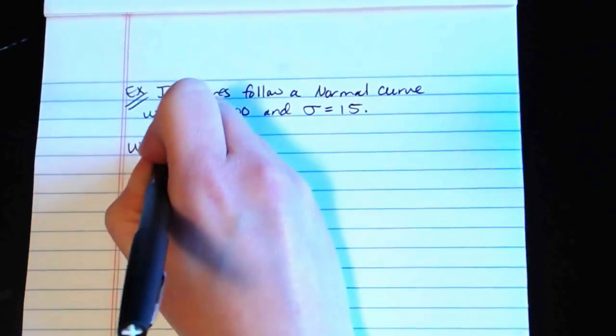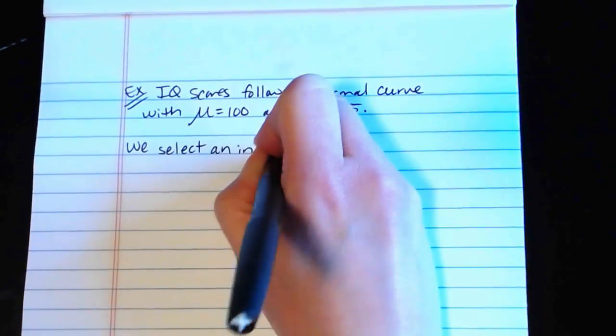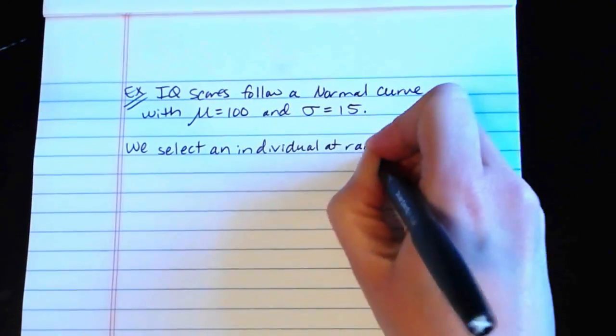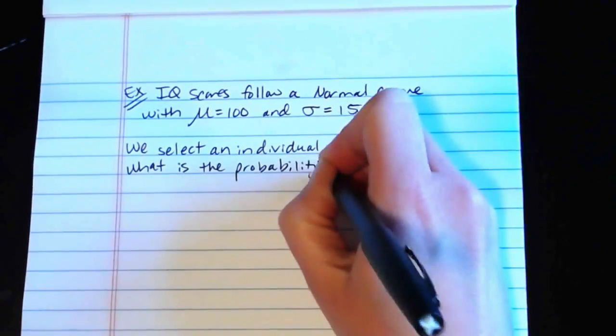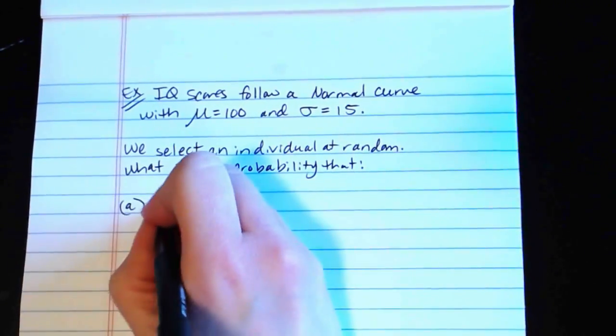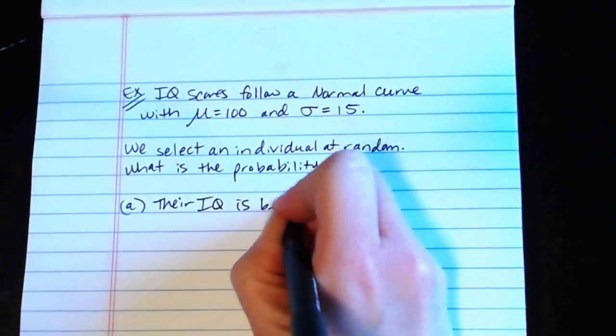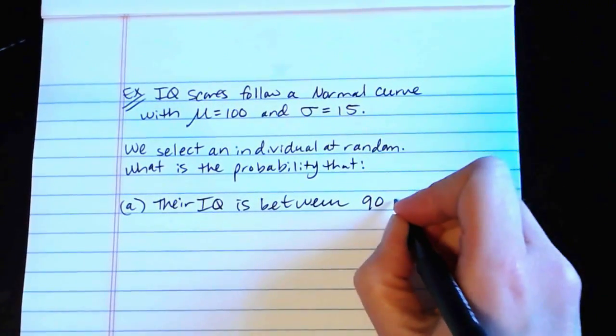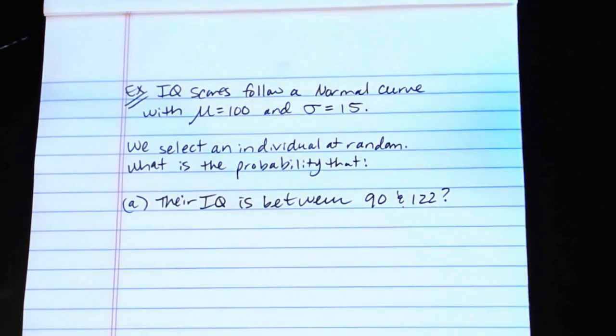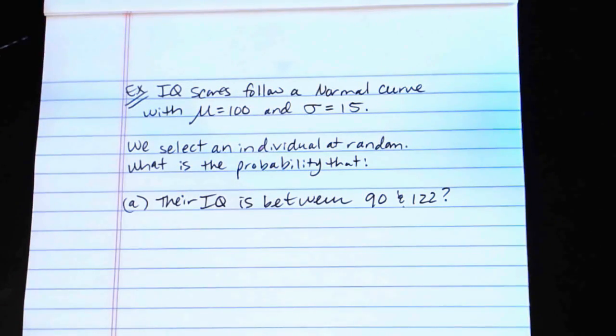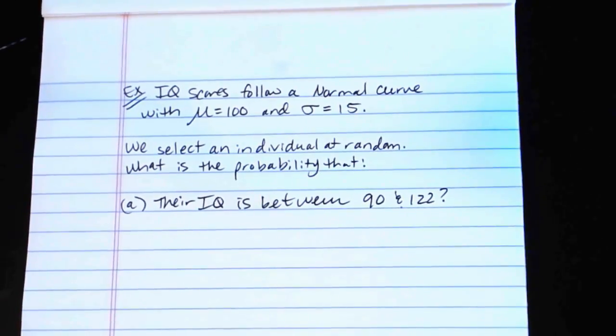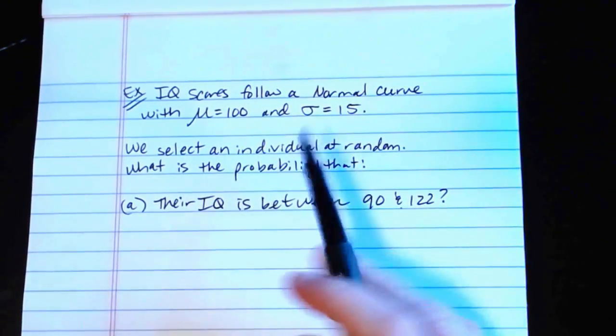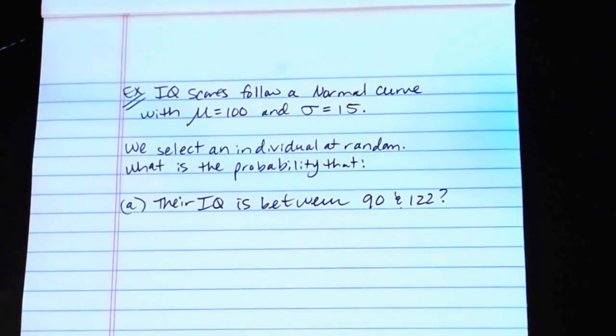And let's say we select an individual at random. What is the probability that, in part A, their IQ is between 90 and 122? Okay, so that's what I want to know. We're going to select an individual at random. What's the probability that they have an IQ that's between 90 and 122? So notice that this is not a problem that we can answer directly with the empirical rule because these do not fall on nice numbers of standard deviations away from the mean of the distribution.